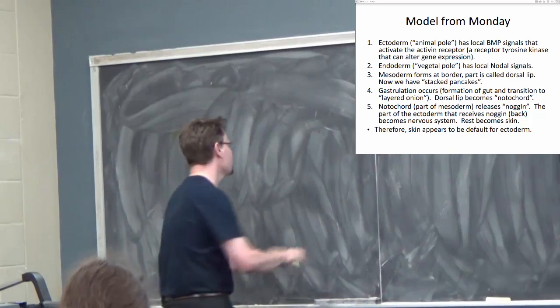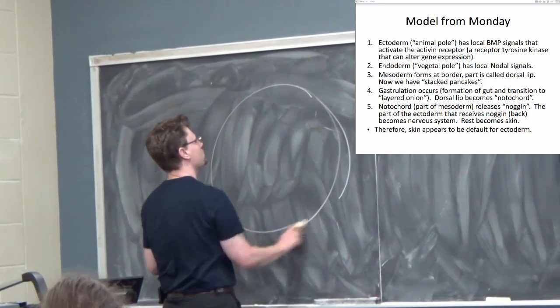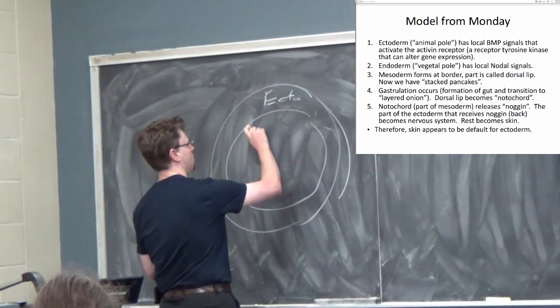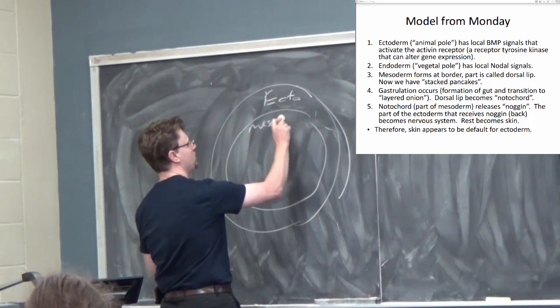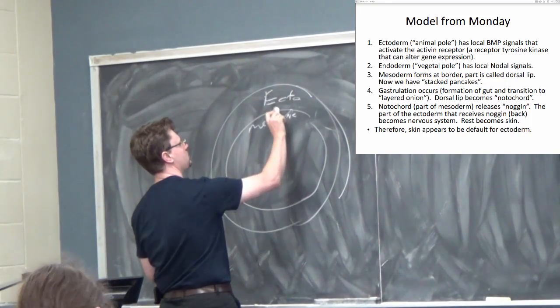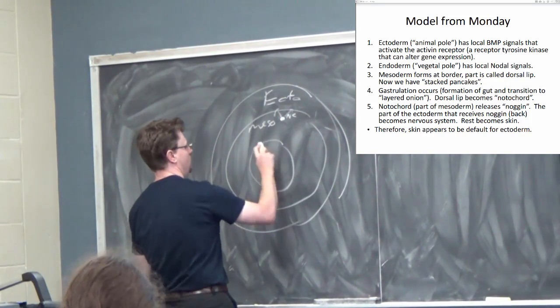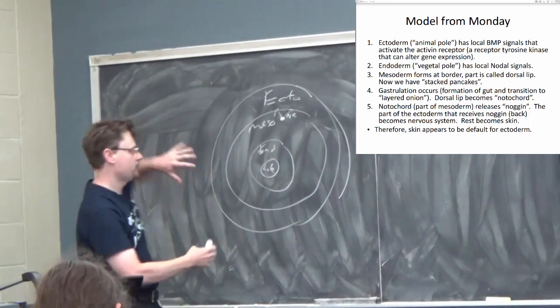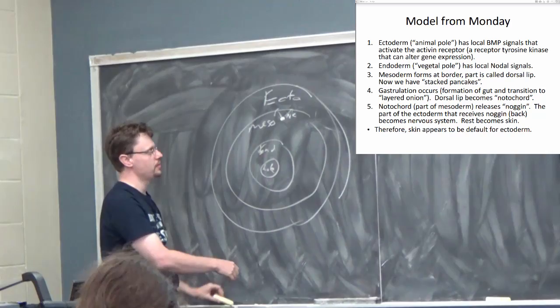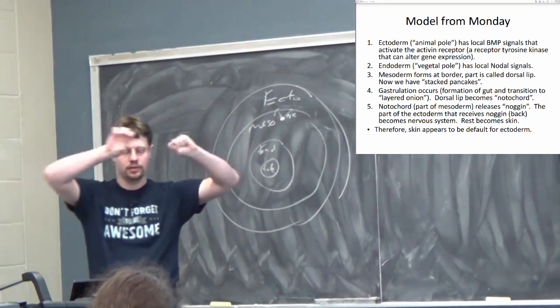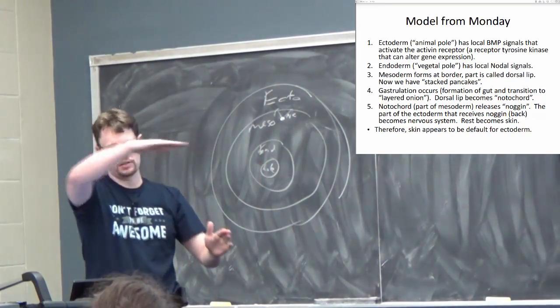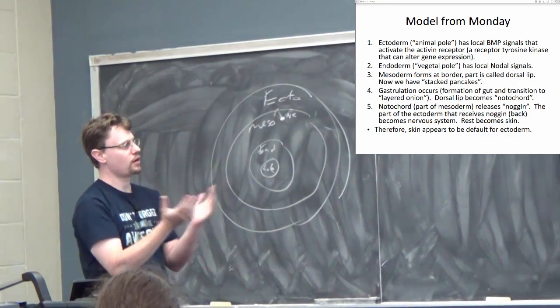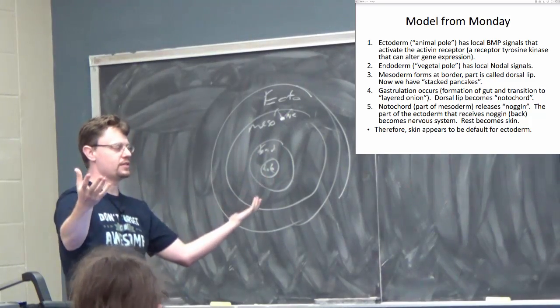And then this notochord, part of the mesoderm, releases the signal noggin. The notochord's up along the back here, so you've got ectoderm, then mesoderm, and over here is our notochord, and it's releasing the signal noggin. And then endoderm, and in here's the hole, the gut. By now the embryo's kind of elongated a little bit, so this is sort of a tube. This is a cross-section of our cylinder.